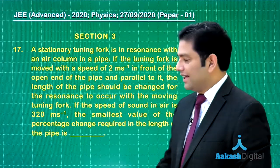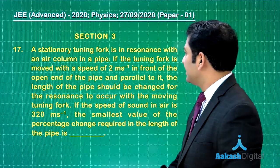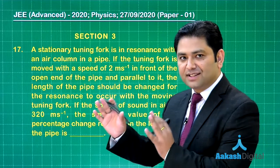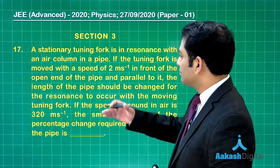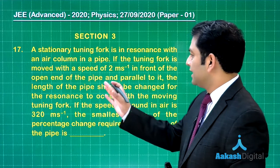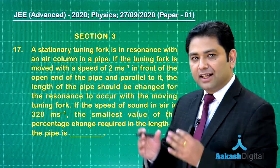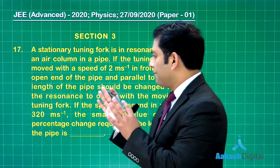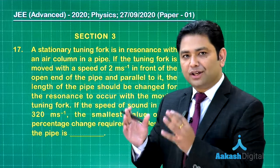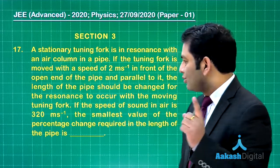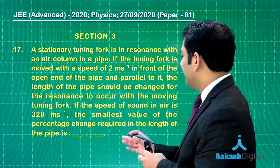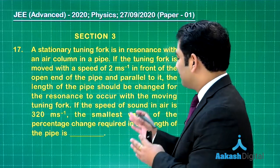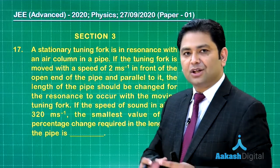Let's move to the next one, question number 17 from sound wave with a little bit of modification. There is a stationary tuning fork in resonance with an air column. The second situation is that the same tuning fork is moved with a speed of 2 meters per second in front of the open end and parallel to it. The tuning fork is approaching the column, so the frequency would increase. We need to calculate the percentage change required in the length of the column so that resonance will still occur.